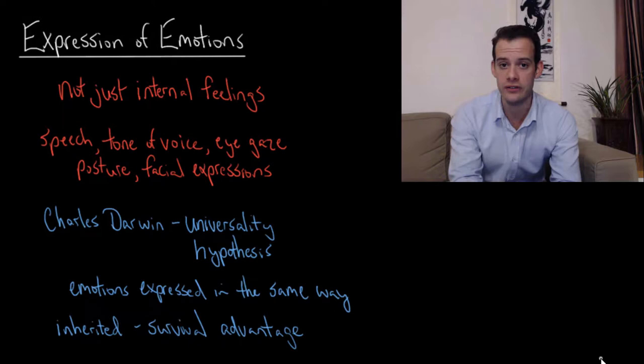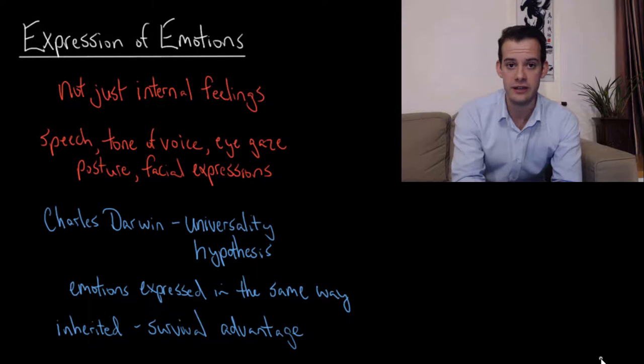How is it that we know how to express a particular emotion in a way that someone else will recognize? And how is it that we're able to recognize the emotional expressions of other people?